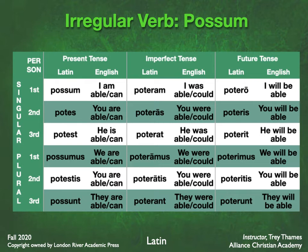My rule of thumb for remembering this: if it begins with an S, you lead with an S — so pos. If it begins with an E, you lead with a T — so pot. Possum starts with an S, so you need pos. Es starts with an E, so you need pot. Everywhere that sum begins with an S, you're adding pos: possum, posumus, possunt. Everywhere the verb begins with an E, like es, est, estis, you add pot to the front: potest, potest, potestis.